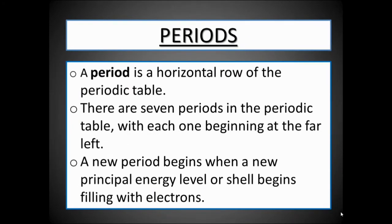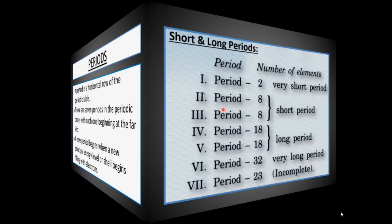A period is a horizontal row of the periodic table. There are seven periods in the periodic table, with each one beginning at the far left. A new period begins when a new principal energy level or shell begins filling with electrons.